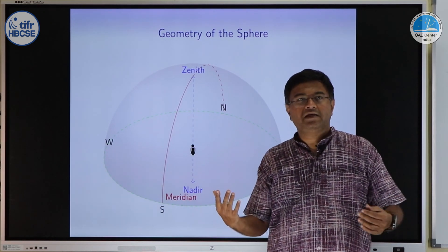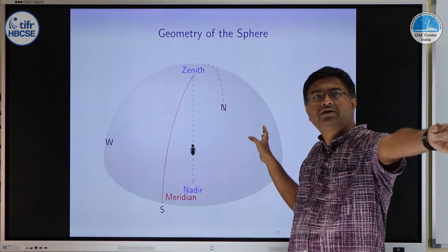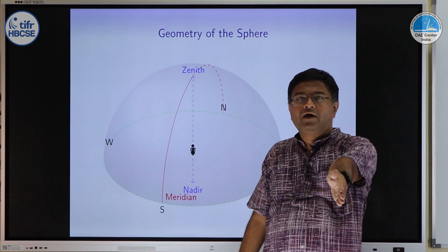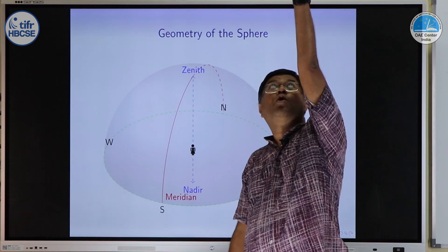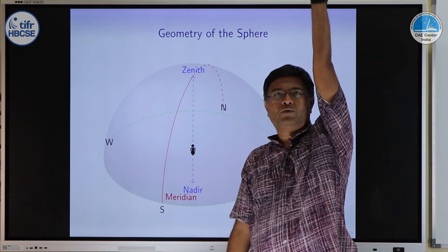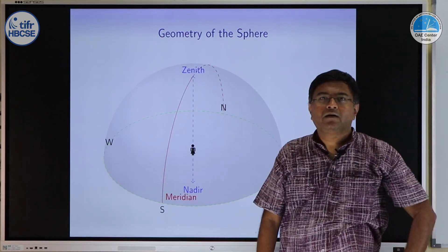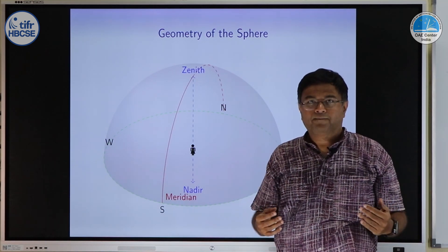For our local environment, we can see there is north direction, there is south direction and then I can say there is semicircular arc which will pass from north, go up all the way up to my overhead point and then go towards south. This will be my local meridian.